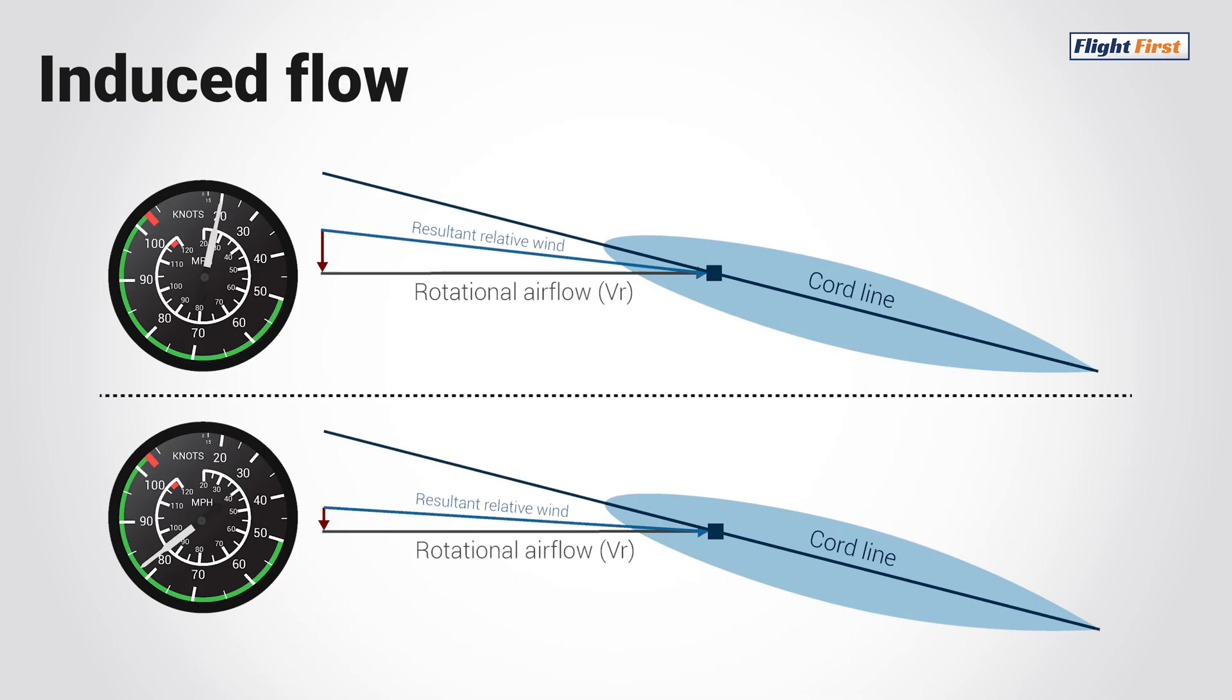Induced flow can be considered a negative component of flight, as it directly reduces angle of attack by changing the angle of the relative wind.